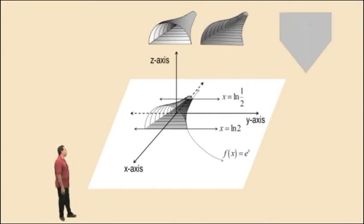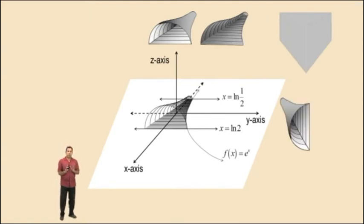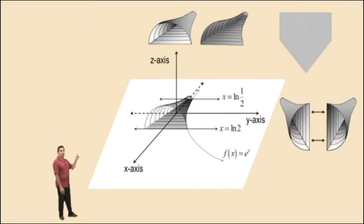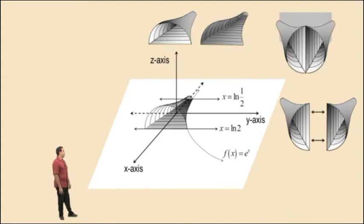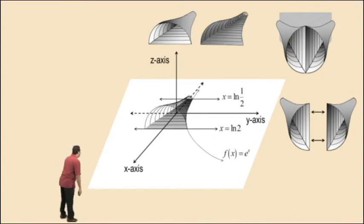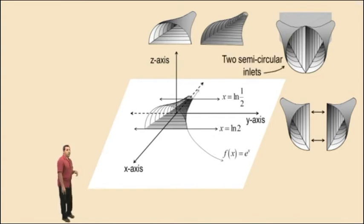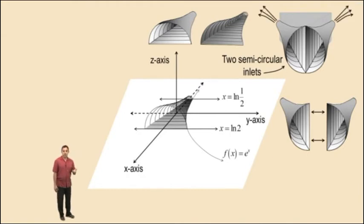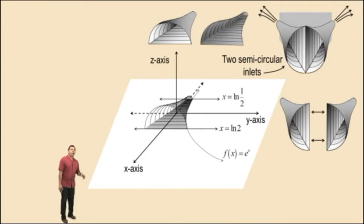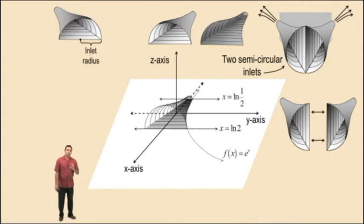Here's a view from the bottom. Now, these two pieces are going to be assembled at the front to redirect airflow around this obstruction. And there's a picture of the result. Notice there are two semi-circular inlets and two semi-circular outlets. First, we're asked to find the area of one individual inlet.